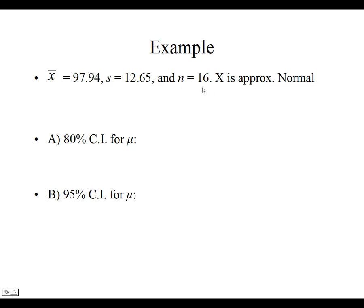This value is less than 30, so we're going to use the t-distribution. We need this other piece of information. X has to be approximately normal.